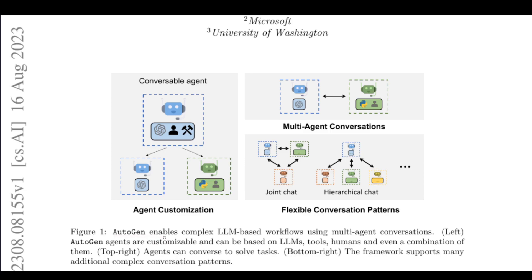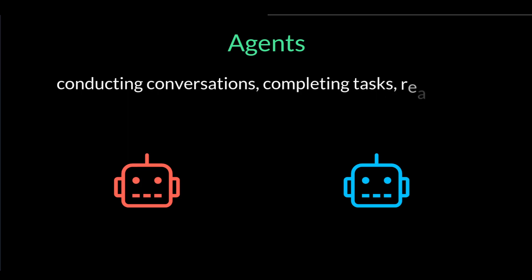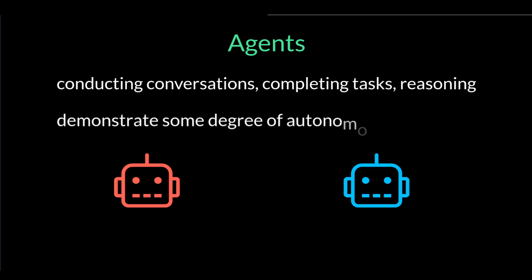Autogen is the latest framework from Microsoft that enables multi-agent conversations and seamlessly allows human interaction in these conversations. An agent is an AI system that can exhibit capabilities such as conducting conversations, completing tasks, reasoning, and can demonstrate some degree of autonomous behavior.